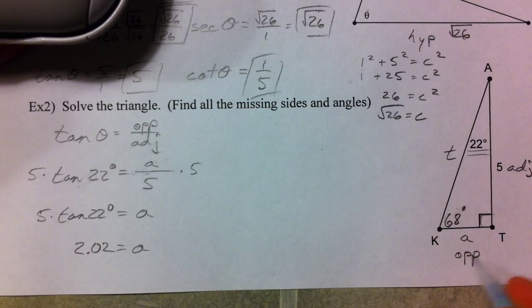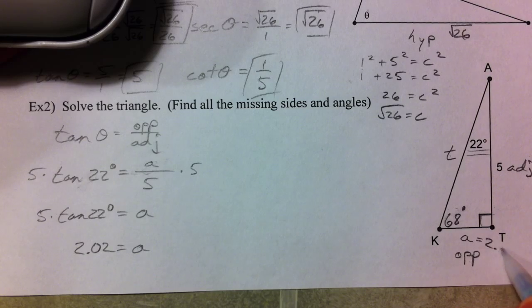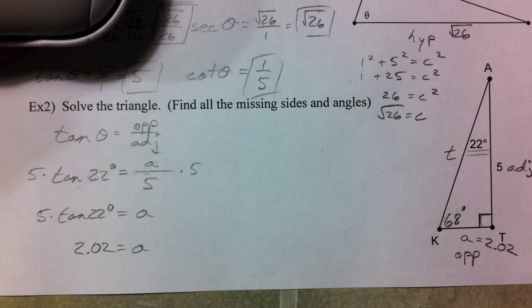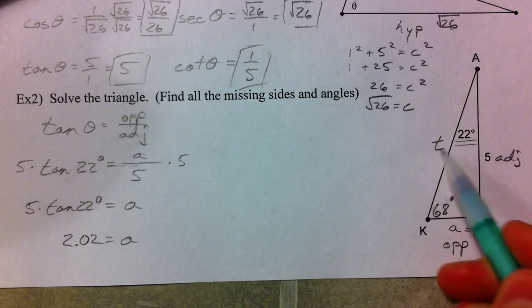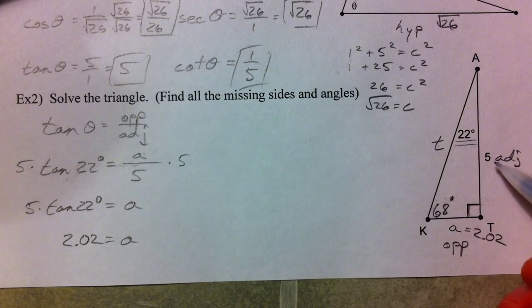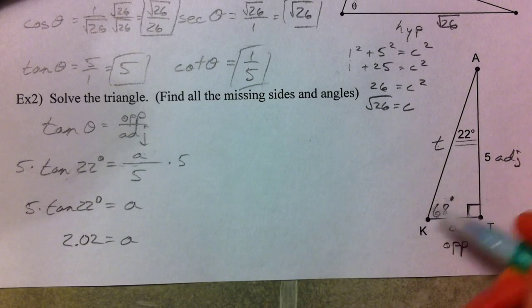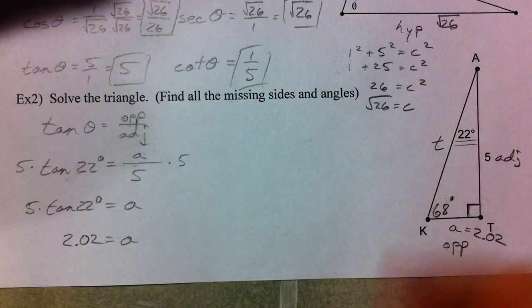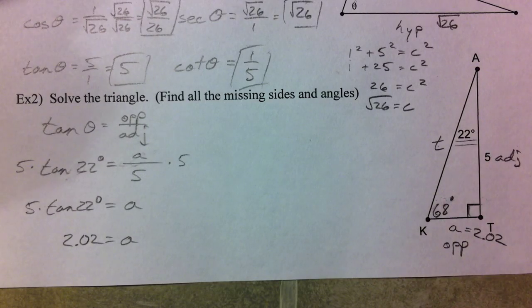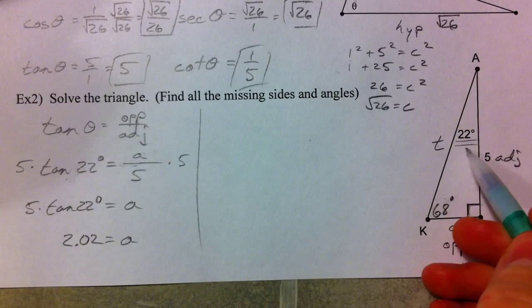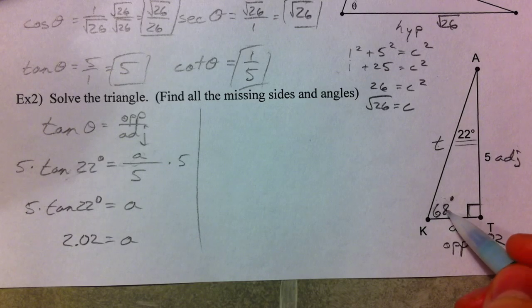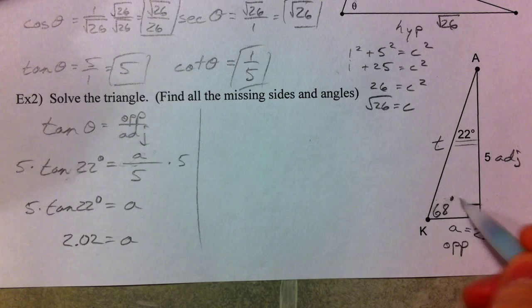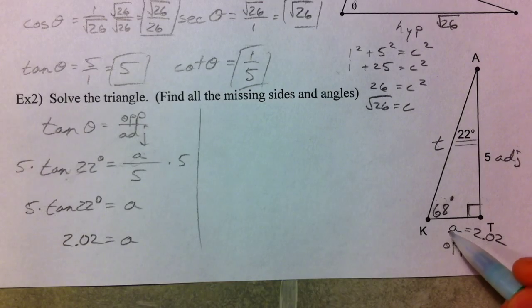So that means A right here is 2.02. Now, if this side is 5 and this side is 2.02, we can use Pythagorean theorem to find T in the same exact way. So usually I would just do 5 squared plus 2.02 squared to get the T squared. But just for extra practice, let's use a different trig function to find T. So T is our hypotenuse. Hypotenuse shows up in sine or cosine. And so since we did so nice to find this other angle 68, even though it's probably not the easiest way to find it. And I'll explain why.